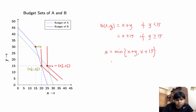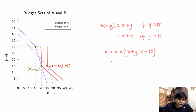Therefore, we can conclude that two individuals making XA* YA* and XB* YB* choices from their respective budget sets can have the same preferences. Now we will look for another example — a utility function that is differentiable — that can also accomplish the same task.